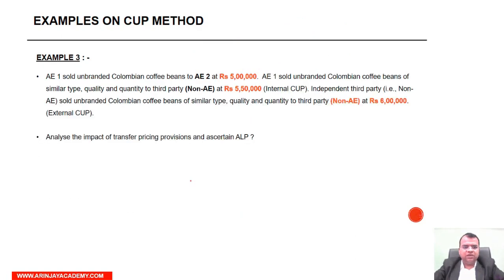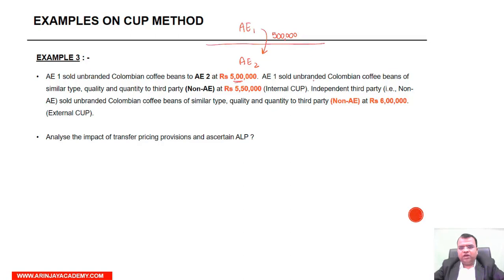Let's look at the third example. AE-1 sold unbranded Colombian coffee beans to AE-2 at rupees 5,00,000. AE-1 also sold unbranded Colombian coffee beans of similar type, quality and quantity to a third party at rupees 5,00,000.